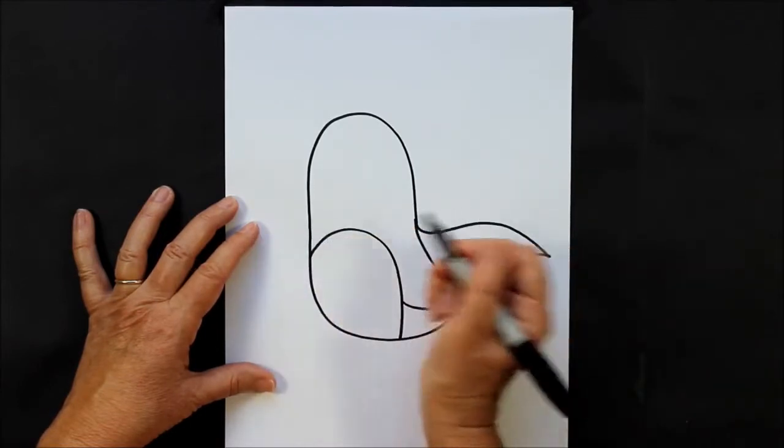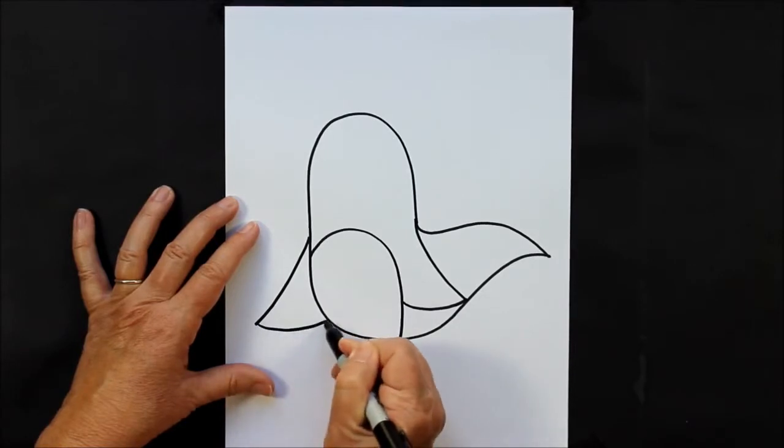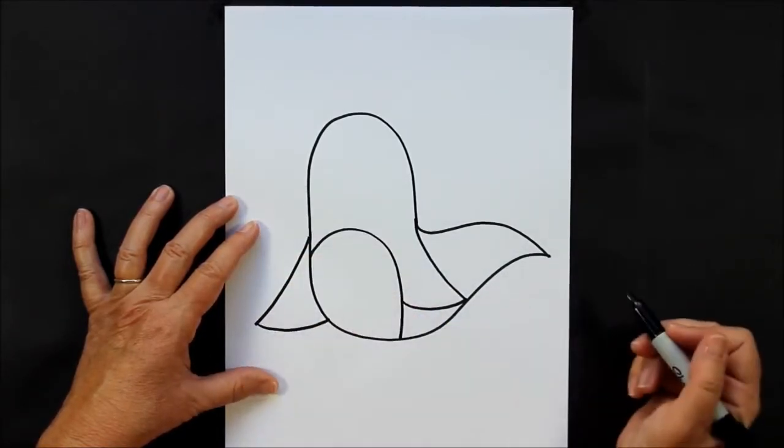And then on this side, this one is going to be sticking out a little, just like that. So a curved line out and a curved line back in.